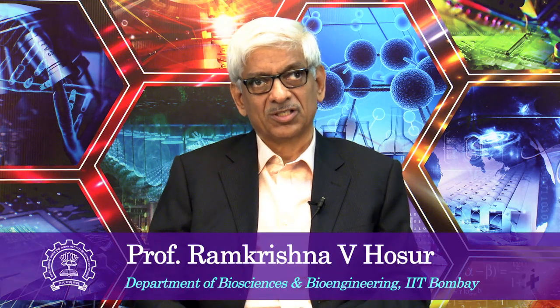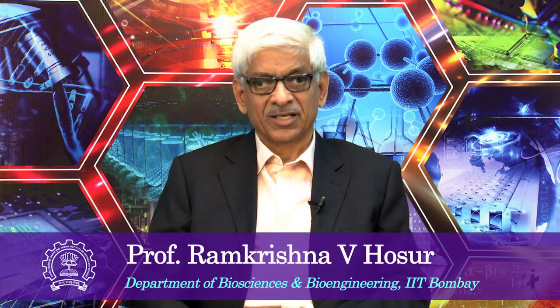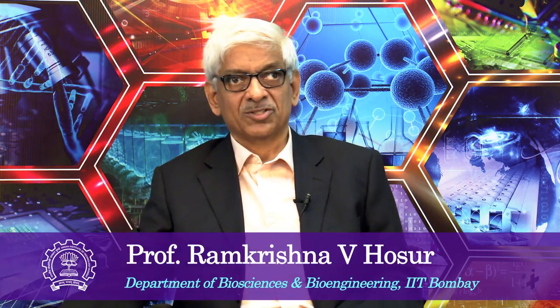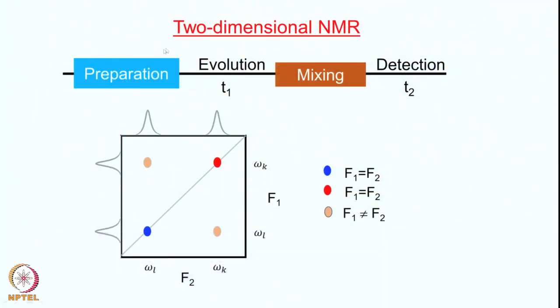Let us do a recap of the last lecture. This summarizes what we did: two-dimensional NMR is based on the concept of segmentation of the time axis. The time axis is separated into four periods — the preparation period, the evolution period T1, the mixing period, and then the detection period T2.